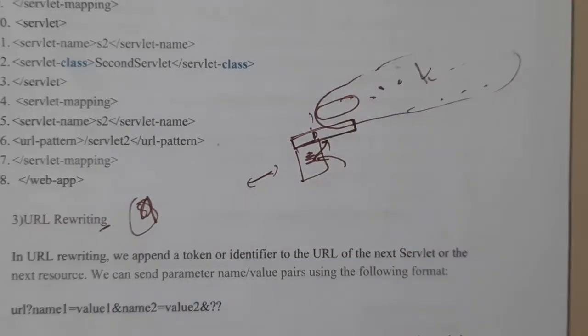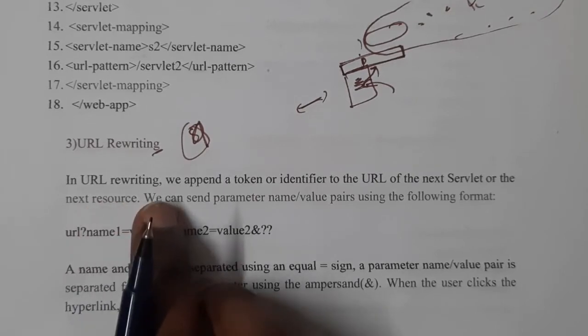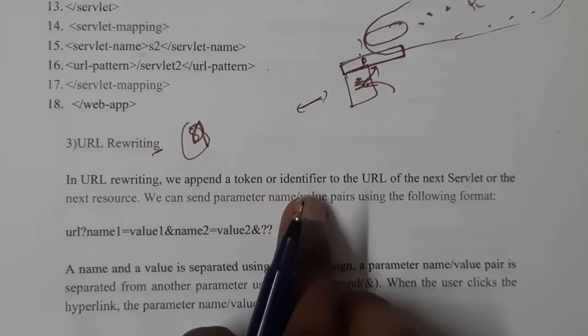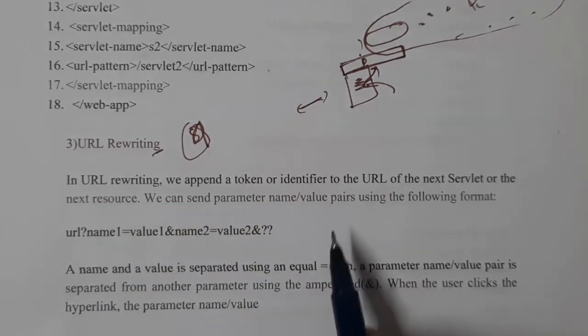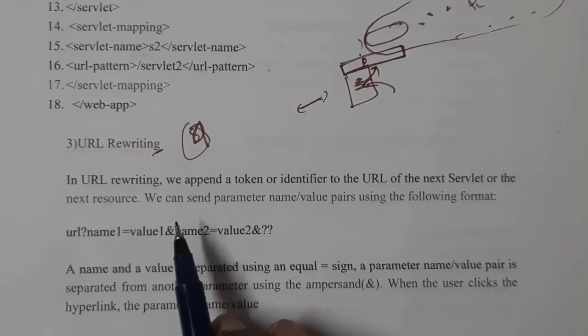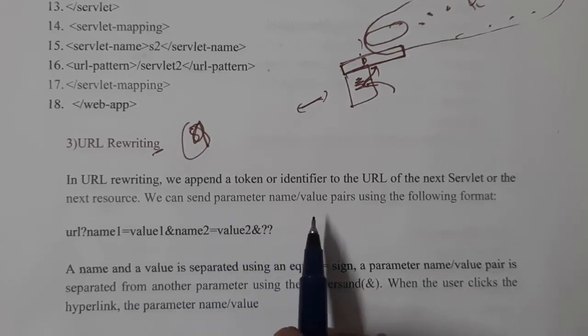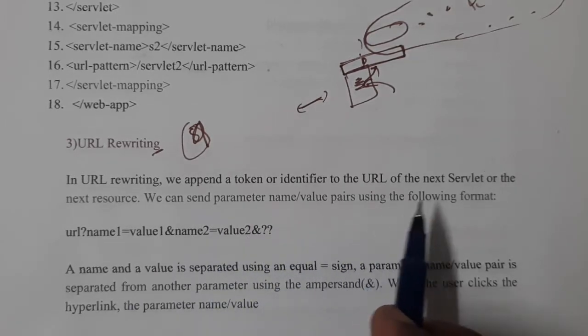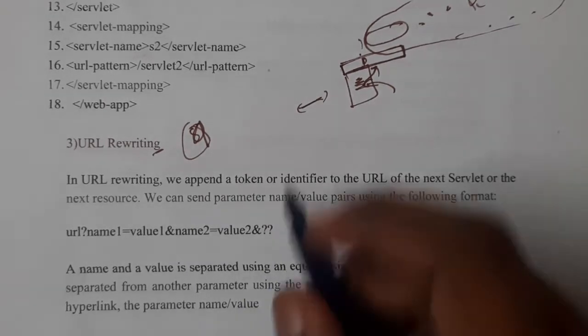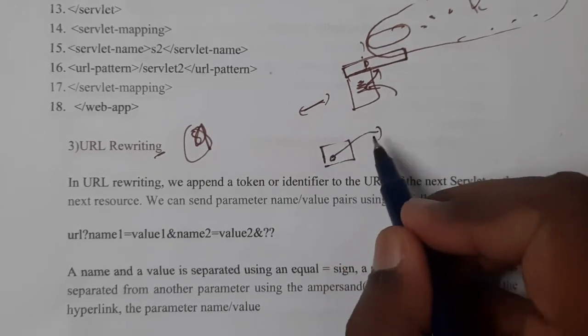This is nothing but URL rewriting. In simple words, in URL rewriting we append a token or identifier to the URL of the next servlet or the next resource. We can send parameter name-value pairs using this format. So assume that when you click on something a particular servlet will be called.